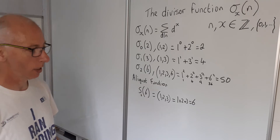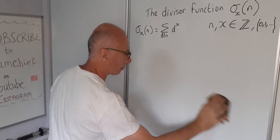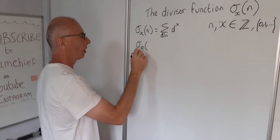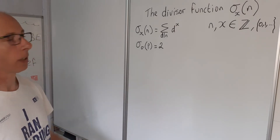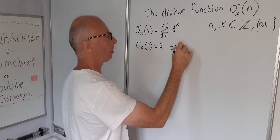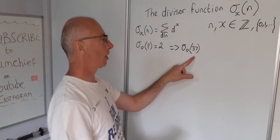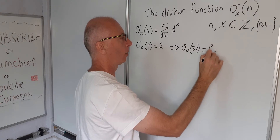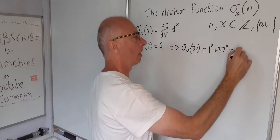One property is that sigma_0 of any prime number always equals 2. For example, sigma_0(37): the divisors of 37 are just 1 and 37, so we get 1 to the power of 0 plus 37 to the power of 0. Anything to the power of 0 is 1, so 1 plus 1 gives us 2. This works for all prime numbers.